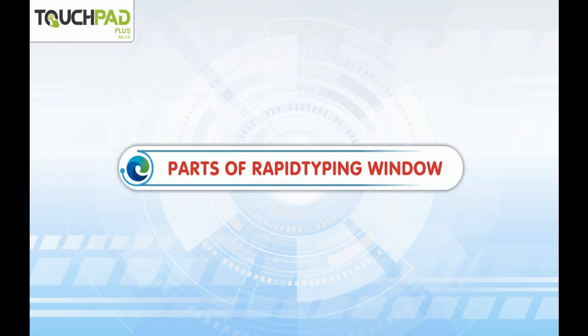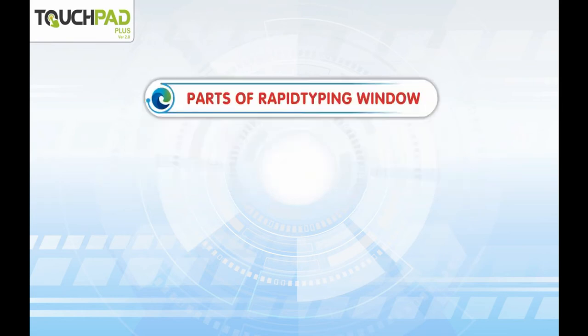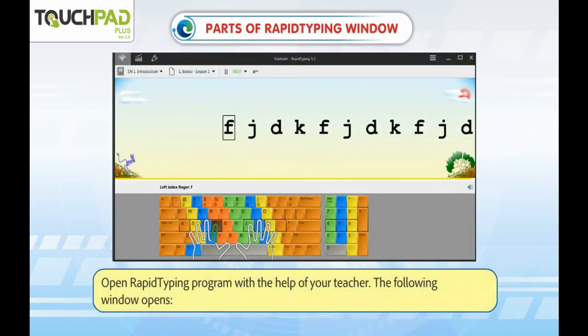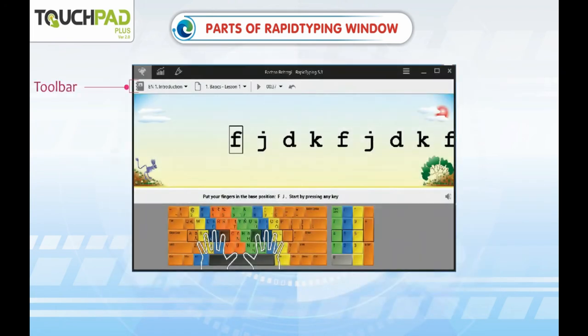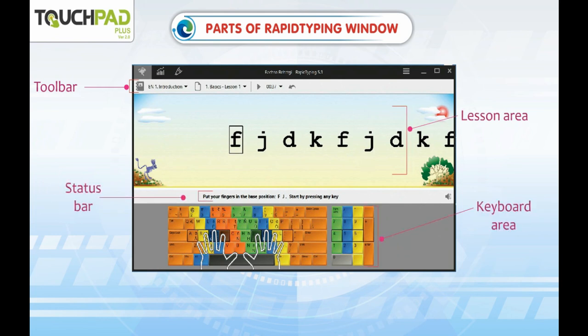Parts of the Rapid Typing Window. Open the Rapid Typing program with the help of your teacher. The following window opens: Toolbar, Lesson Area, Status Bar, and Keyboard Area.